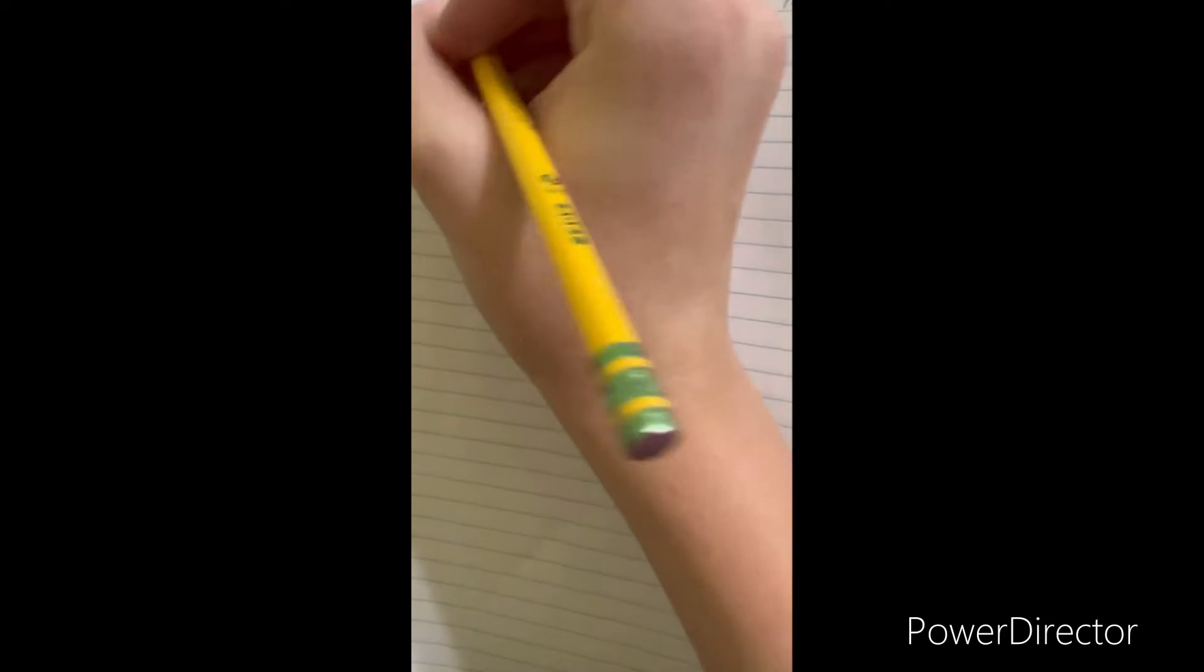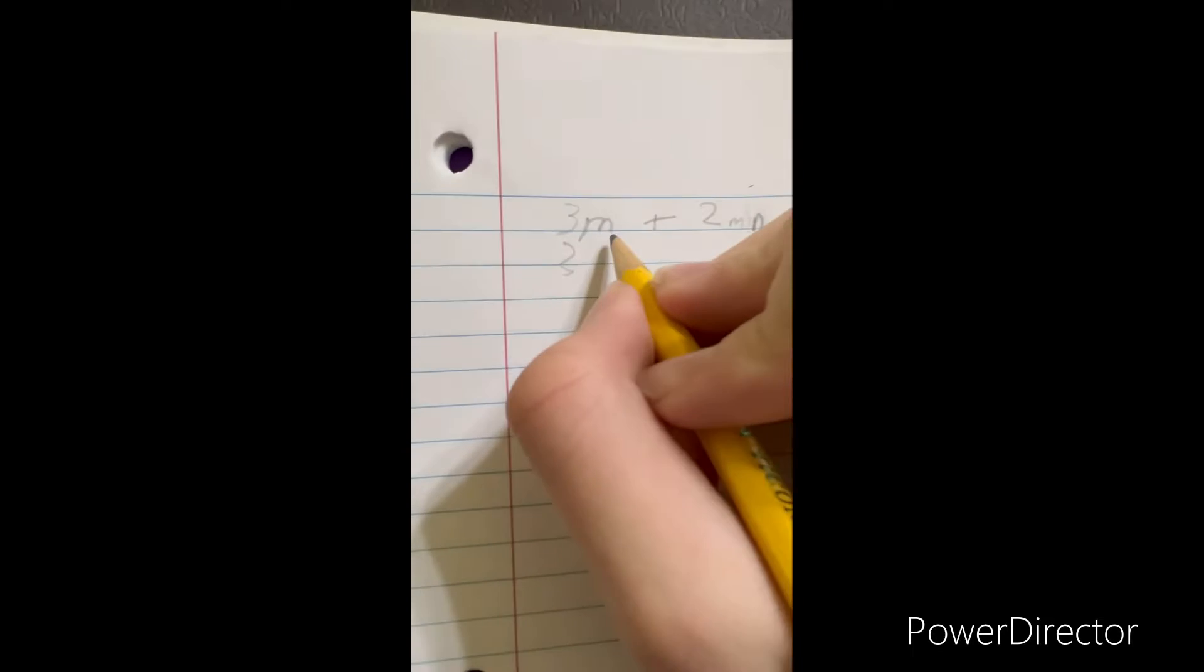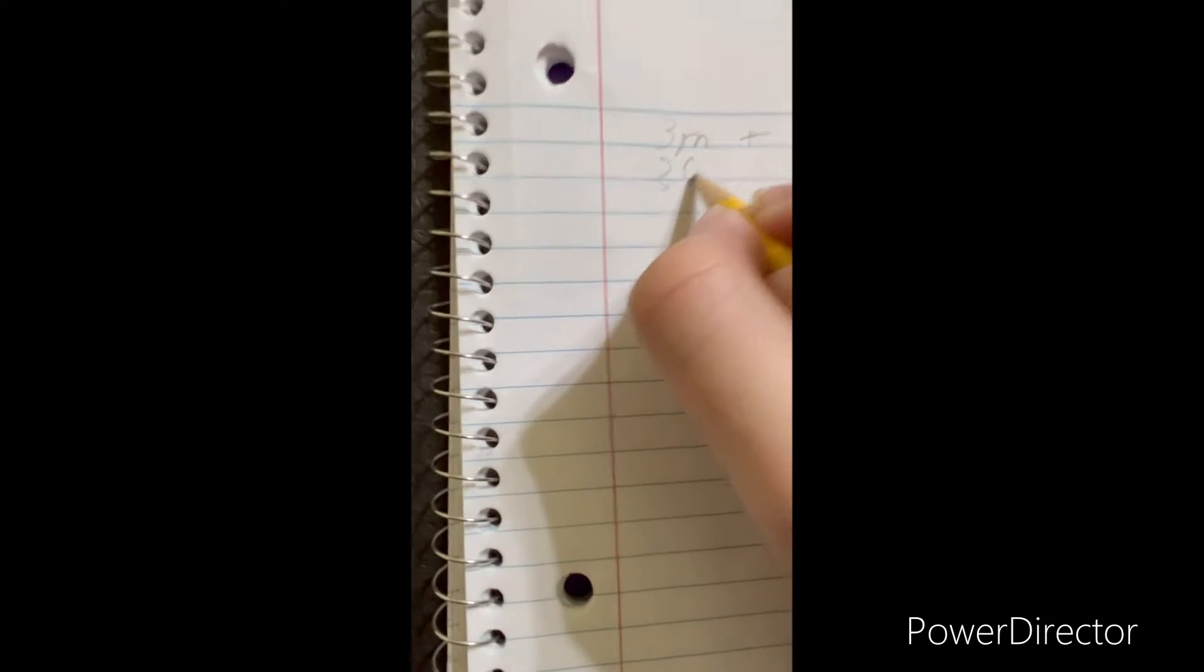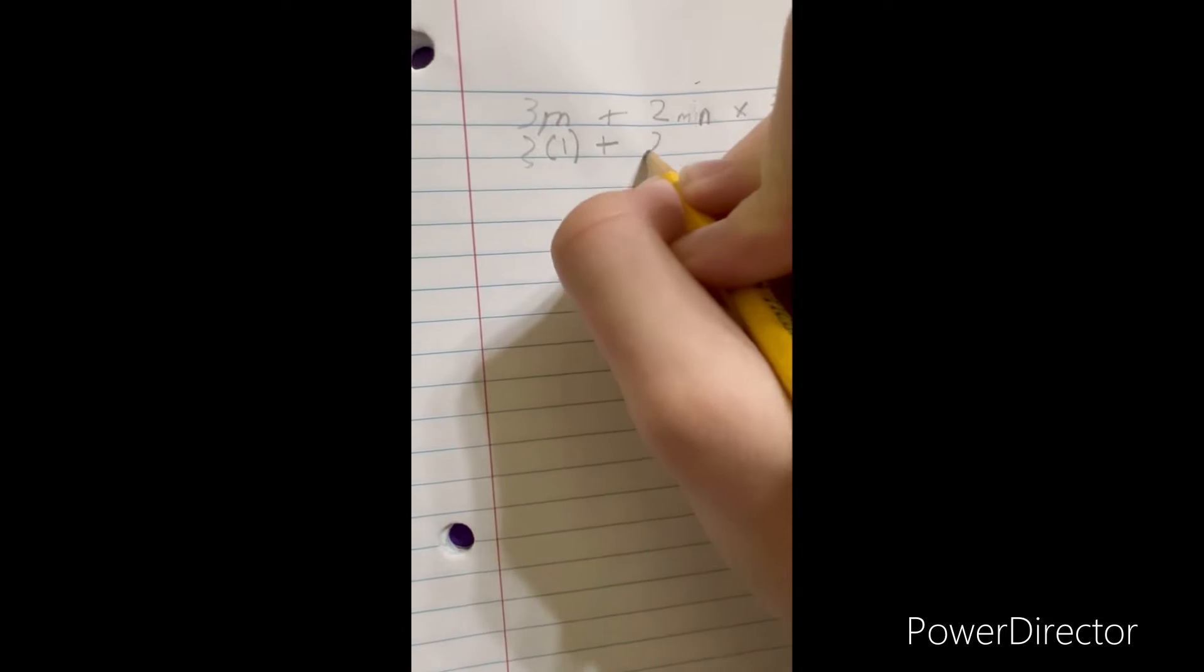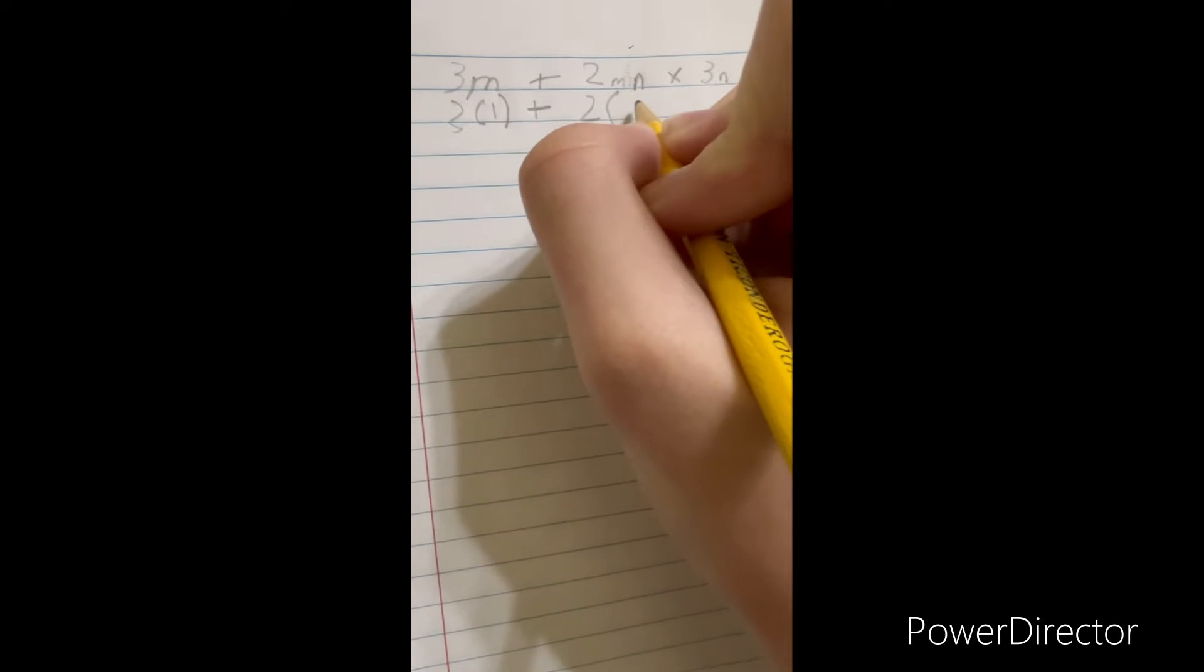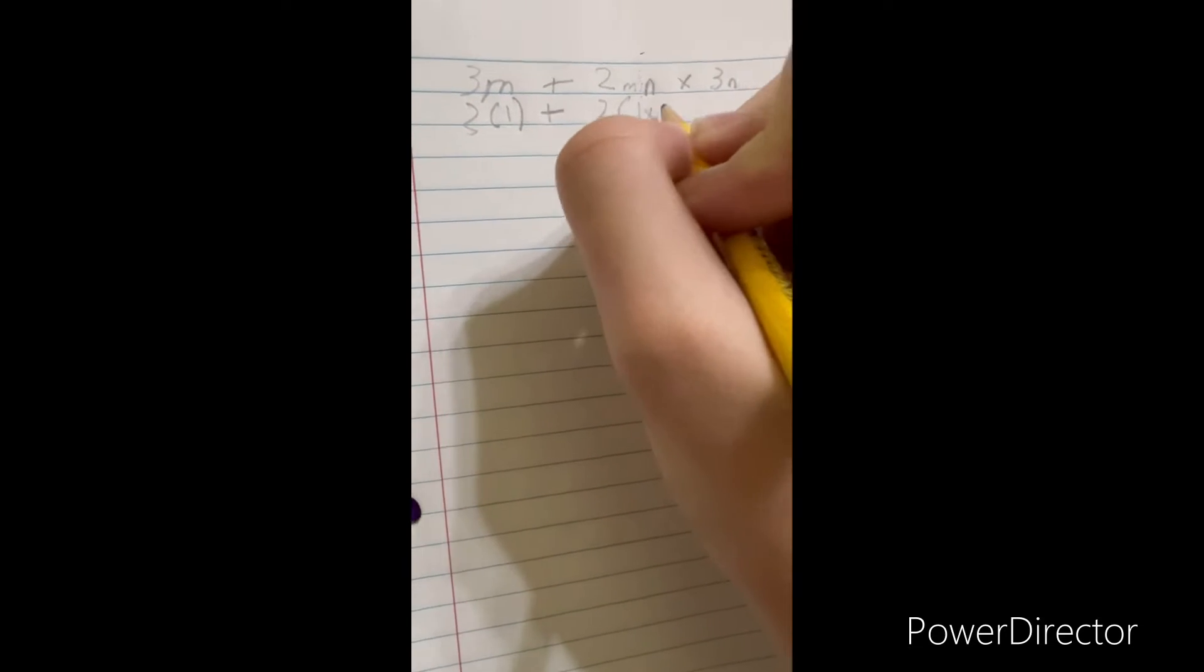First you gotta plug and chug. You take the numbers and rewrite them down. First you got your three, and then your one, and then you put your plus down and two parentheses here, one times n... oops, not n.